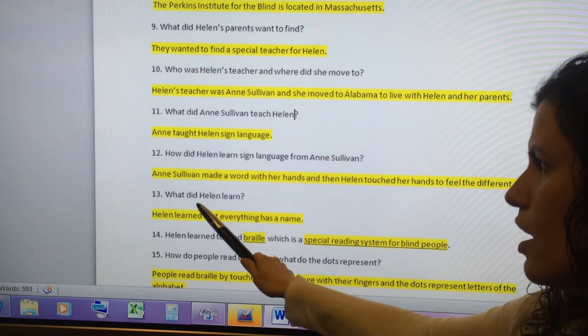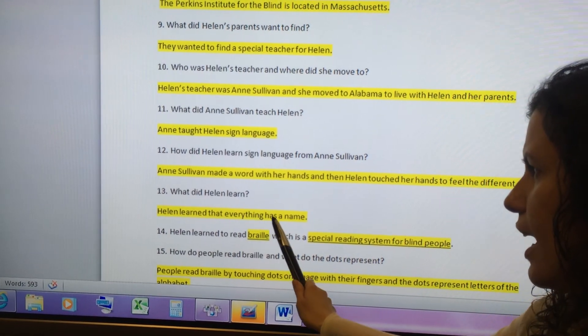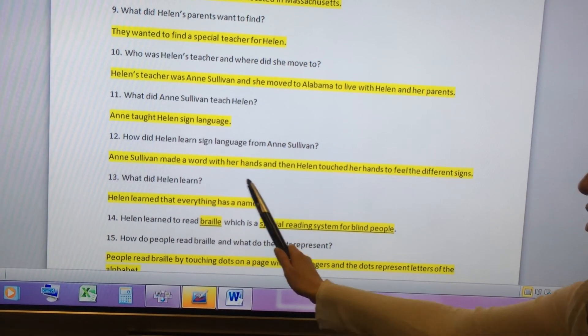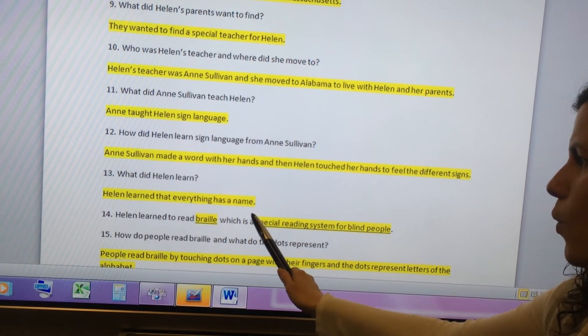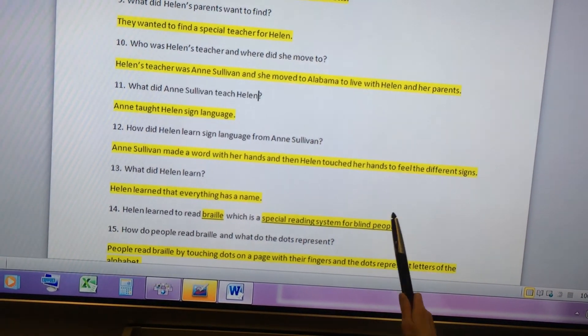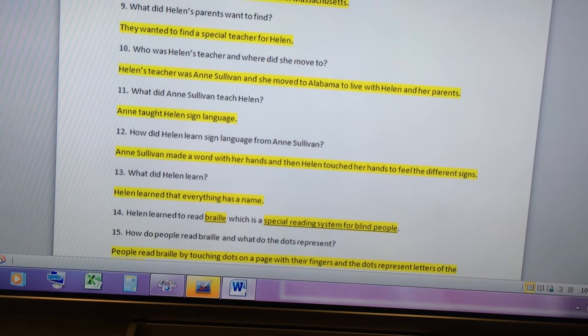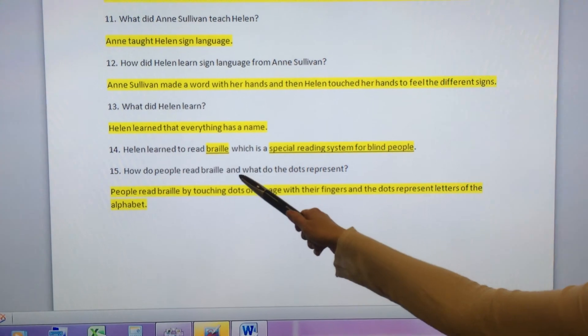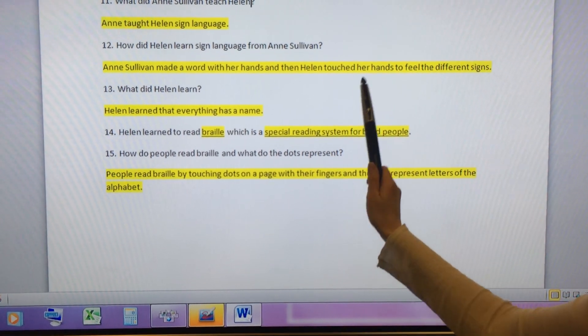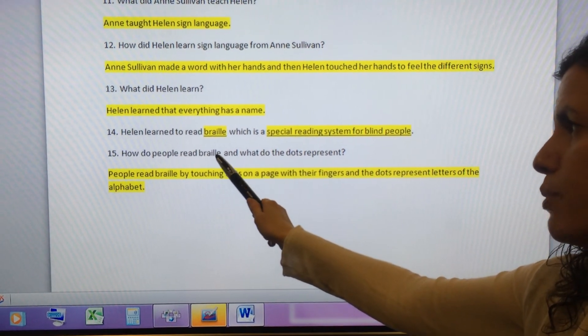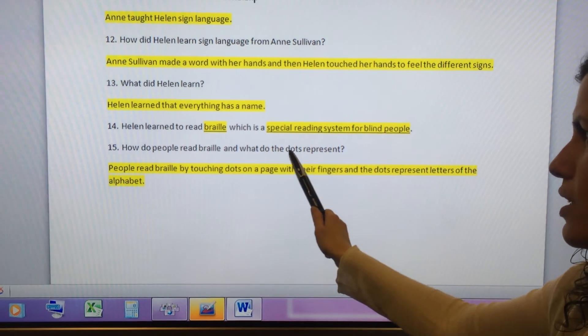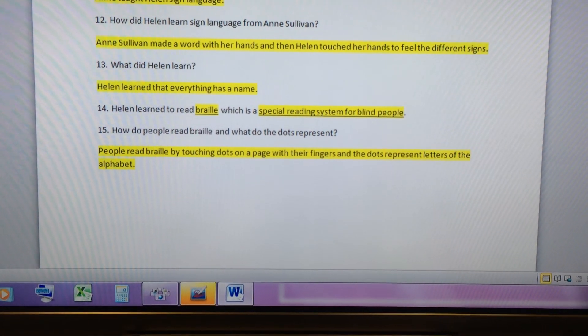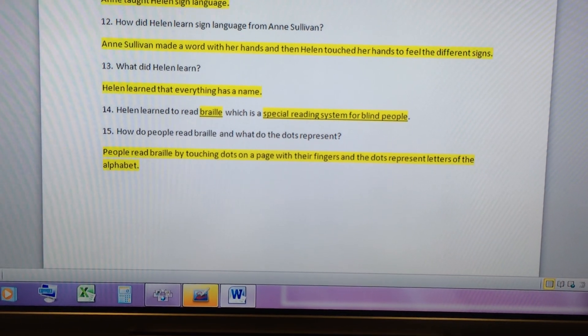What did Helen learn? Helen learned that everything has a name. Here is another fill in the blank. We have two missing answers. Helen learned to read Braille, which is a special reading system for blind people. And finally, number 15. How do people read Braille and what do the dots represent? Another two-part question. First, how do people read Braille and what do the dots represent? People read Braille by touching dots on a page with their fingers and the dots represent letters of the alphabet.